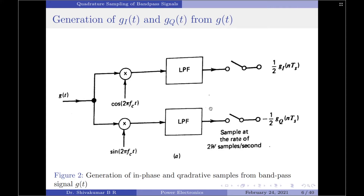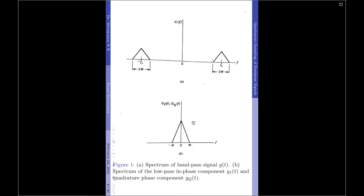That is, the frequency values for gi(t) and gq(t) take only values between −W and +W, i.e., −W < f < W. This is illustrated in figure 1b. Therefore, what we learn from this preparatory operation is that after extracting gi(t) and gq(t) from the original signal g(t), we find that the spectrum of the in-phase and quadrature phase components are strictly band limited, and this is exactly what it looks like in figure 1b.